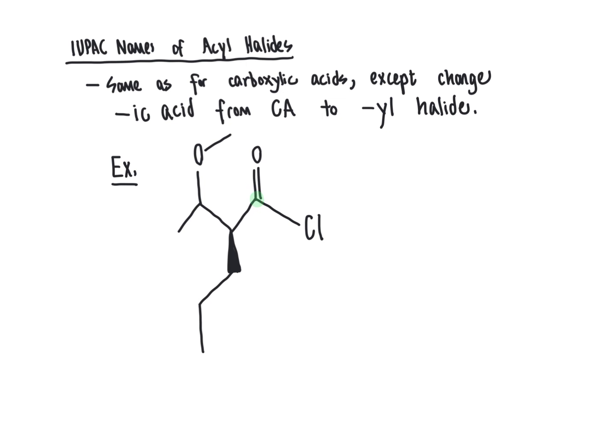We find the longest carbon chain starting from the carbonyl carbon. Going in one direction gives us two more carbon atoms; going in the other direction gives us three more carbons. We choose the longer direction — going down here, here, and here — to give us our parent chain and hence our parent name. We number starting at the carbonyl because it is the highest priority group in nomenclature.